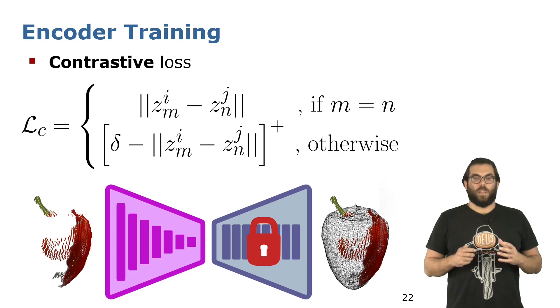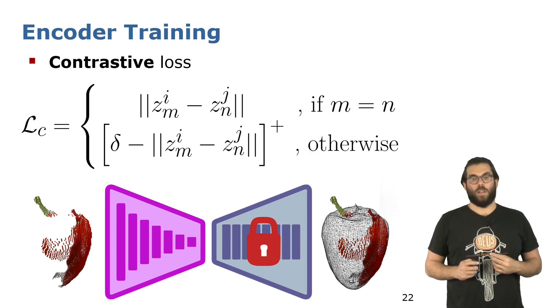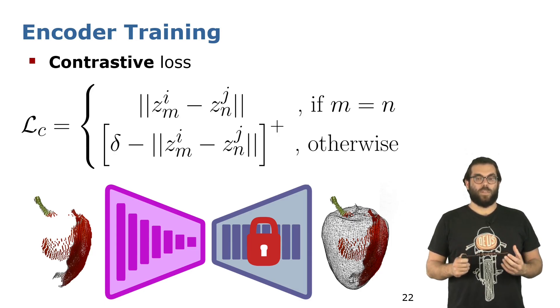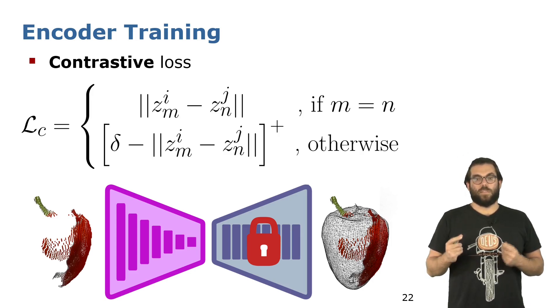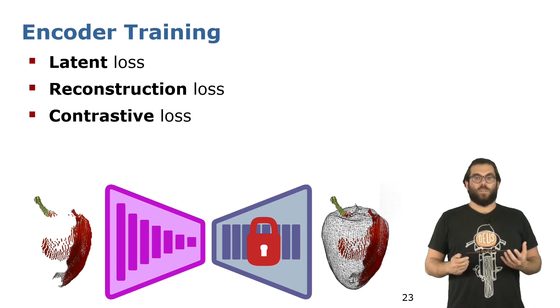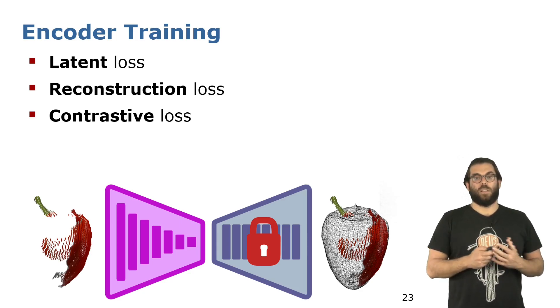Now, the third loss term is the one that we care the most about. As mentioned before, for the same fruit, we have different observations coming from different viewpoints. We want these different observations to generate the same fruit, and we have done that by enforcing a contrastive loss on the latent space. The latent vector z coming from different observations of the same fruit should generate the same latent vector, while different fruits should generate different latent vectors, and these should be as far as possible. This is modeled by the delta in the equation.